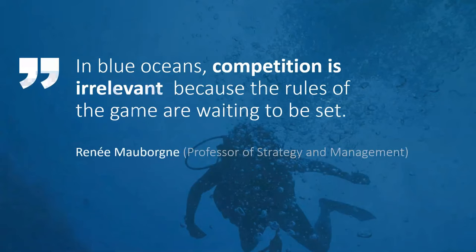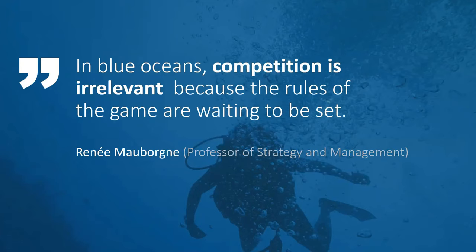This first came out of research at the European Institute of Business Administration — one of the top-ranked business schools in the world — where they looked back at businesses and the strategic moves they made spanning hundreds of years and 30 different industries. Kim and Mauborgne talk about companies succeeding as blue oceans when they find uncontested market space, whereas most of us are functioning in red oceans, fighting for dominance in a bloody water of competition.